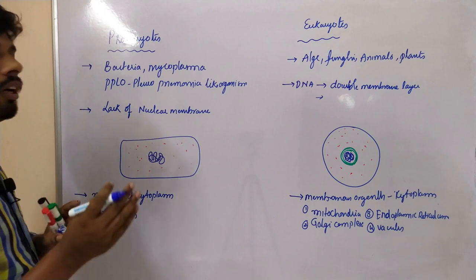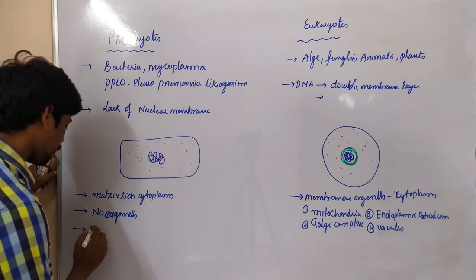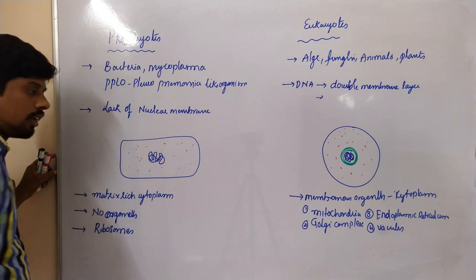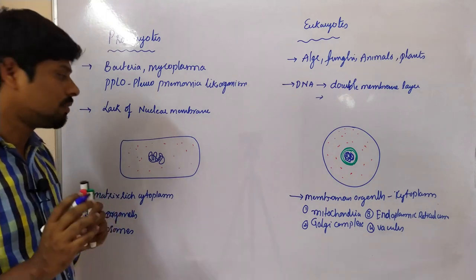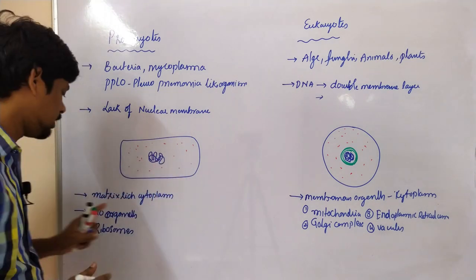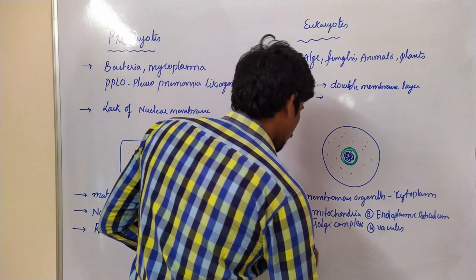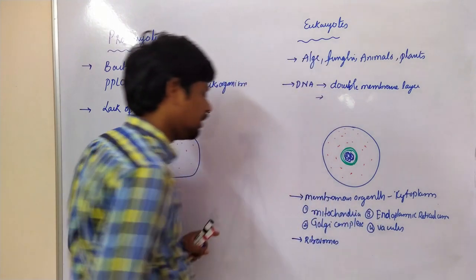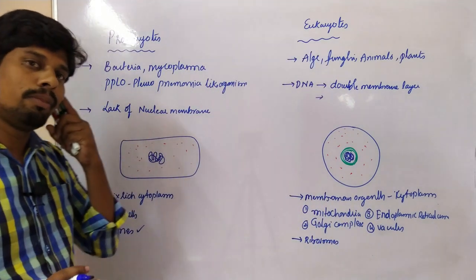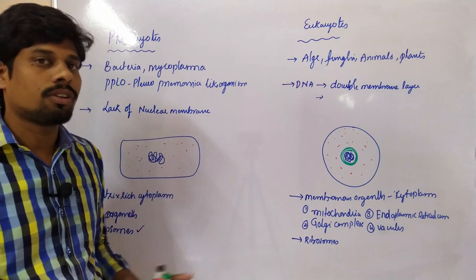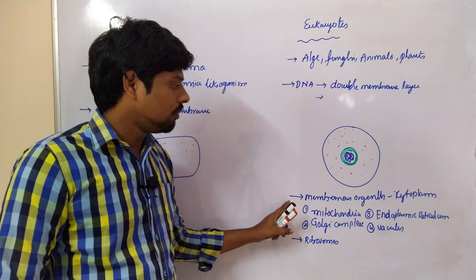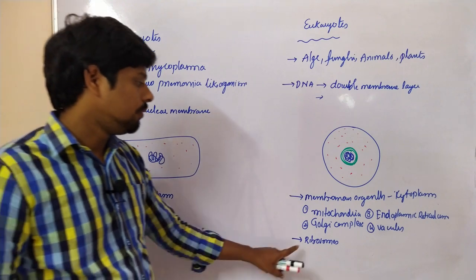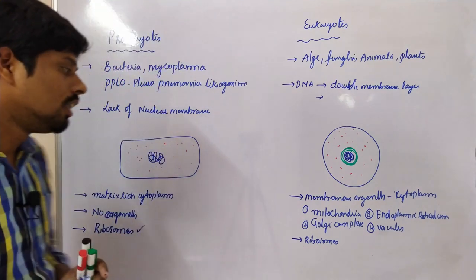However, non-membranous organelles are present in both eukaryotes and prokaryotes. That is the ribosome. Ribosomes are the non-membranous structures present in both. A very important point: which organelle in eukaryotes does not have a membrane structure? The answer is ribosomes.